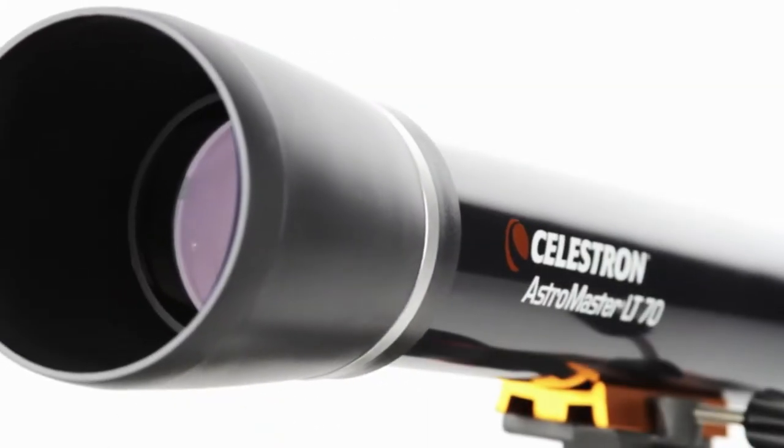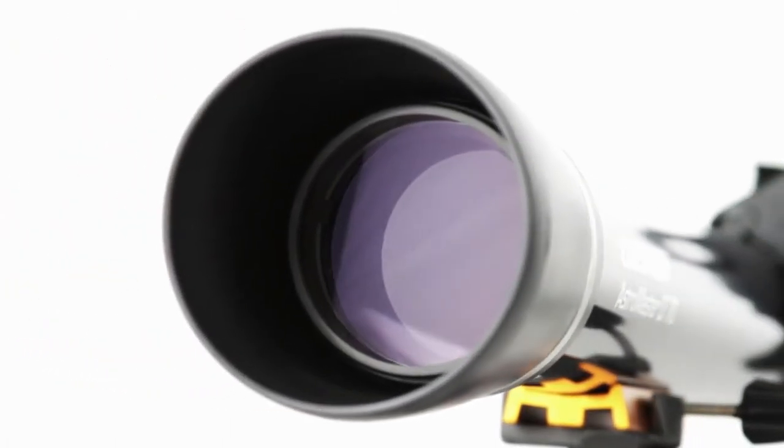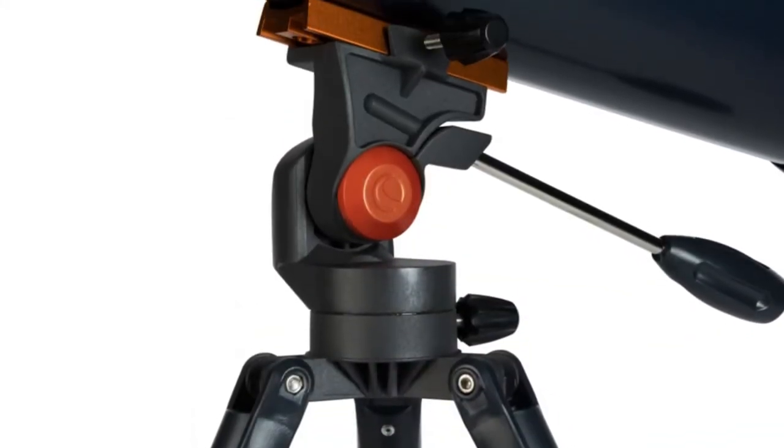Even if you've never used a telescope before, you'll be navigating the sky in just minutes with your AstroMaster LT. The Alt-Azimuth mount with panhandle makes pointing at celestial objects simple and intuitive.